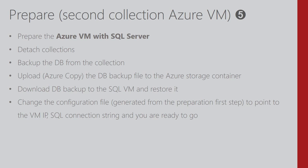For the second collection, I created an Azure VM with SQL Server, detached the collection, backed up the database, and uploaded the backup to the Azure storage container using AzCopy. Then I downloaded the backup onto the SQL Server VM using the Azure portal UI and a download manager, restored it on SQL Server, and prepared the VM firewall so VSTS could connect and retrieve the data. I then updated the settings file with the VM IP and database connection string.